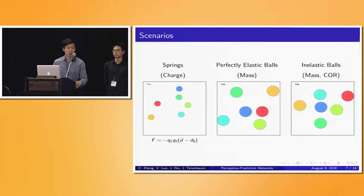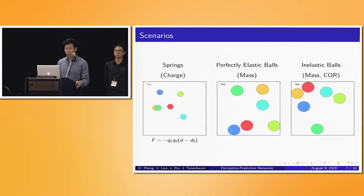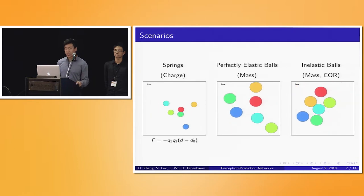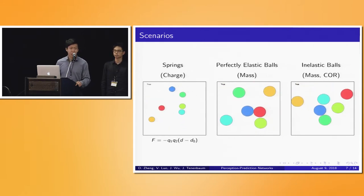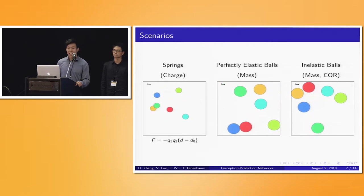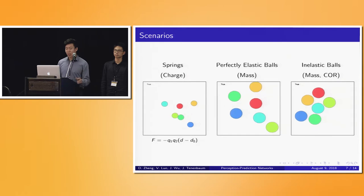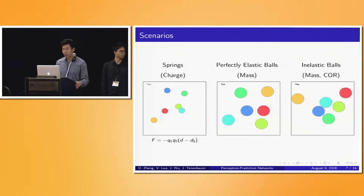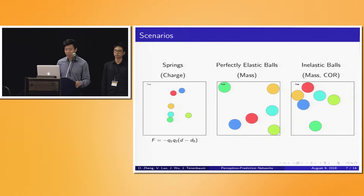The three scenarios that our model is tested on are: first, the spring scenario, where the underlying object property is a made-up property called spring charge. Each pair of objects has a spring attached to it and the spring constant is determined by the product of the two objects' spring charge. In the second scenario, we have the perfectly elastic ball scenario, where each object's underlying property is mass and collision dynamics are based on the masses of the two objects. In the third scenario, we add a second property — coefficient of restitution — to show our model's ability to handle multiple properties. When two objects collide, their coefficients of restitution help determine the amount of kinetic energy lost in the collision.